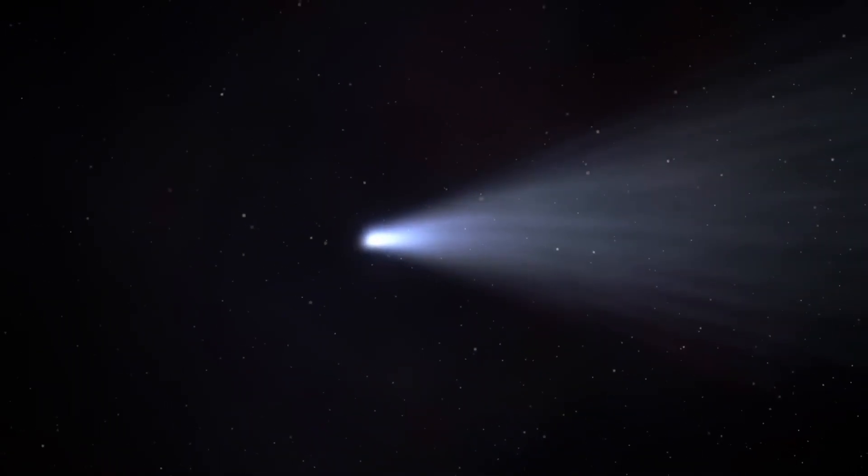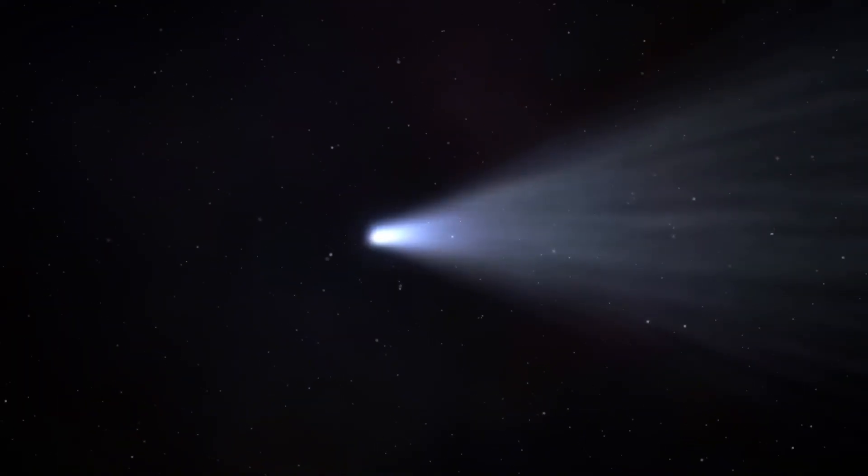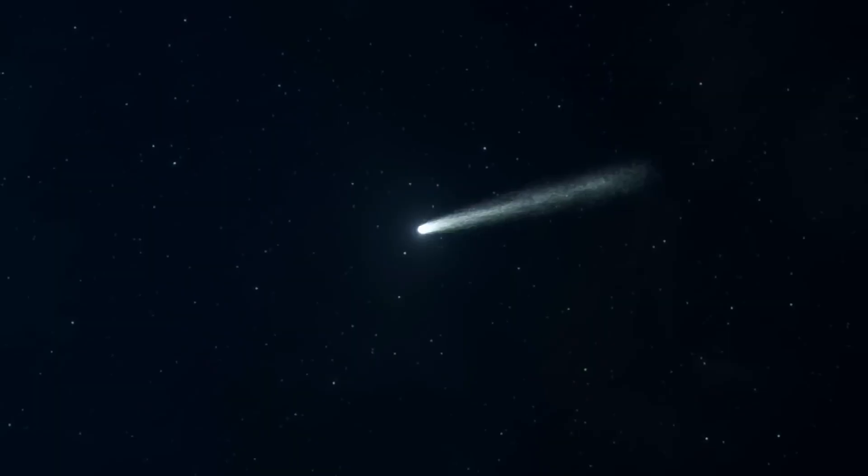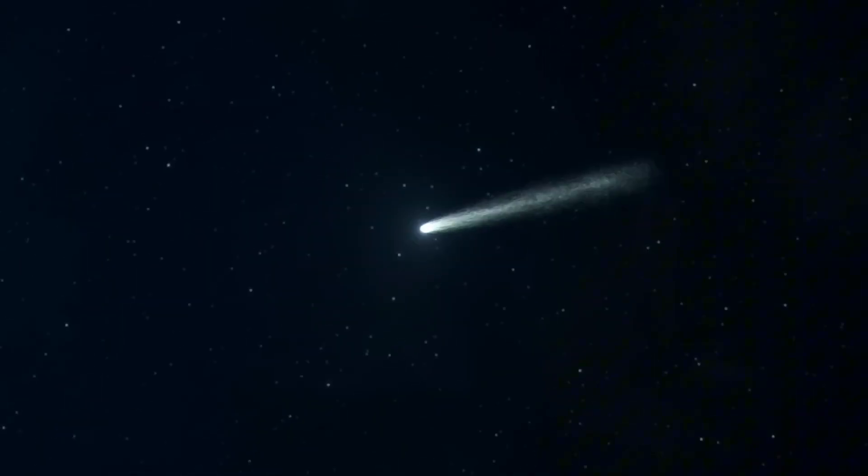The object is officially named 3I Atlas, indicating the third confirmed interstellar visitor. Its orbit is hyperbolic, not elliptical, confirming it came from elsewhere in the galaxy and passes through our solar system just once. Following its close pass near the sun in late October, it will accelerate away back into interstellar space. This is a one-time opportunity for study.